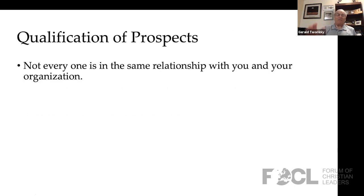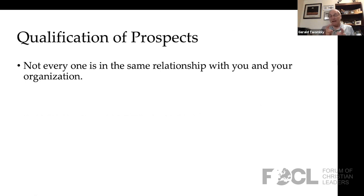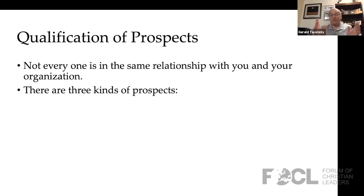Not everybody is going to be in the same relationship as the person next to them. We have 500 prospects — now what do we do with them? We realize intuitively that not every one of them is in the same relationship as the person next in line alphabetically. So there are three kinds of prospects.